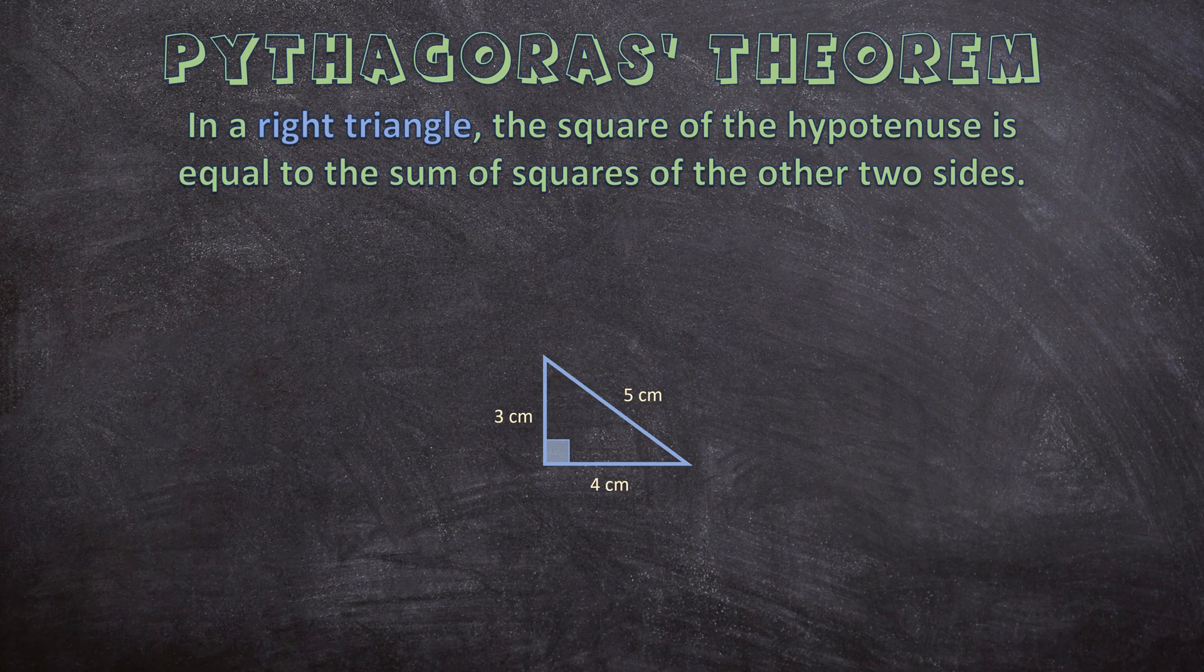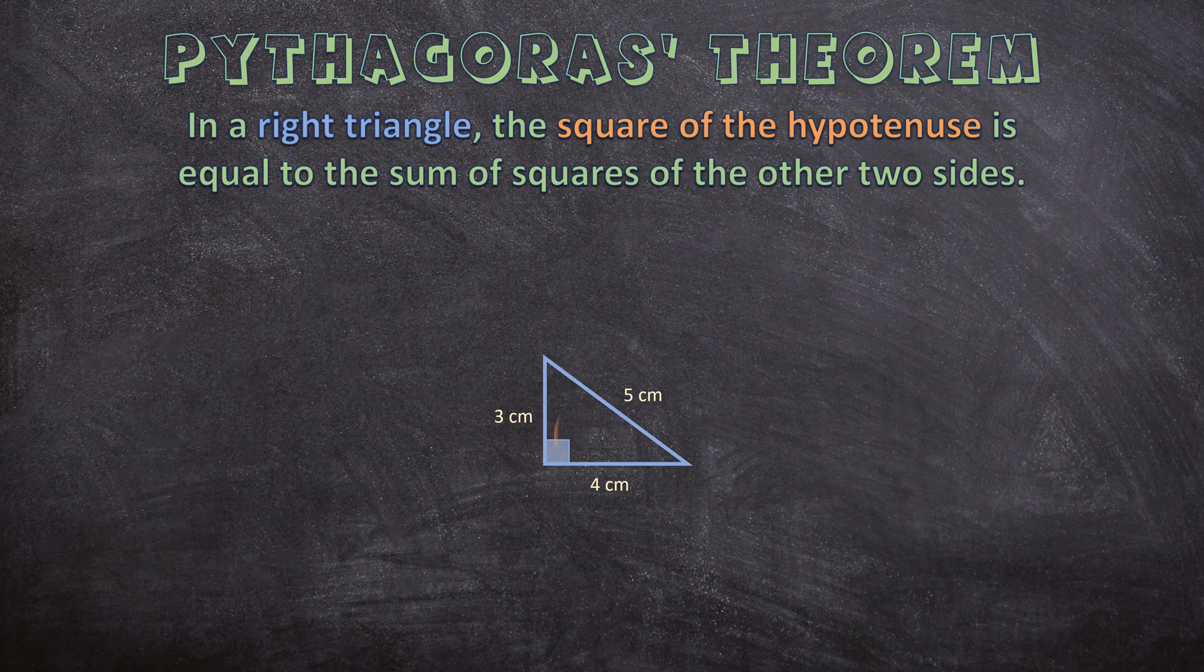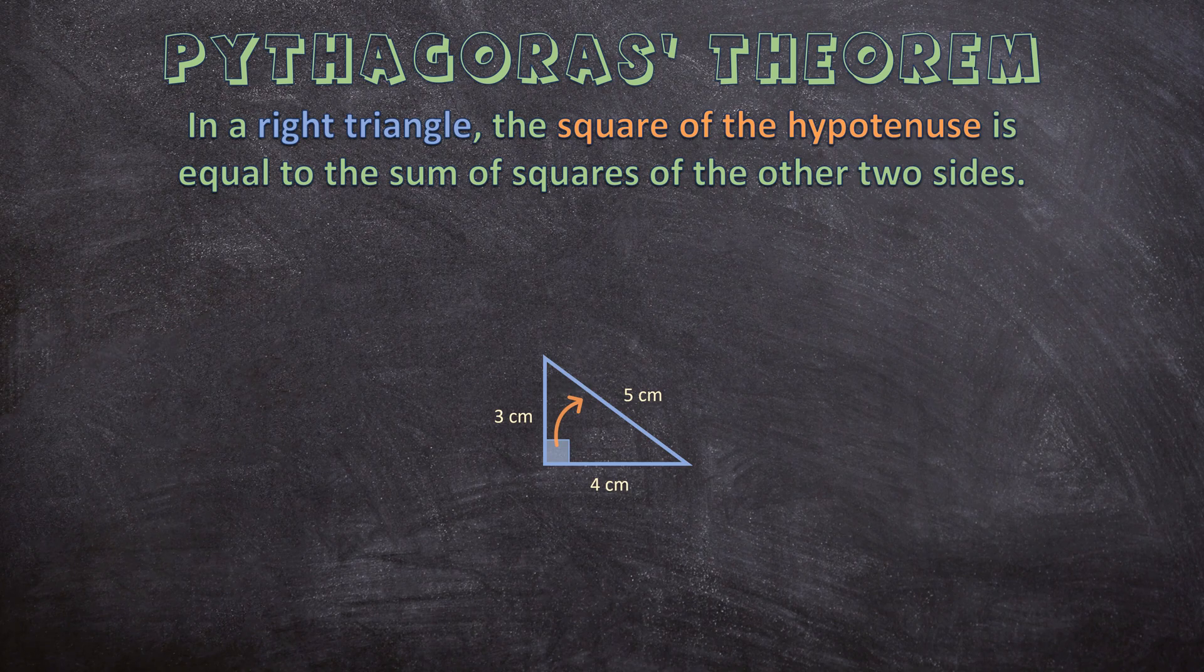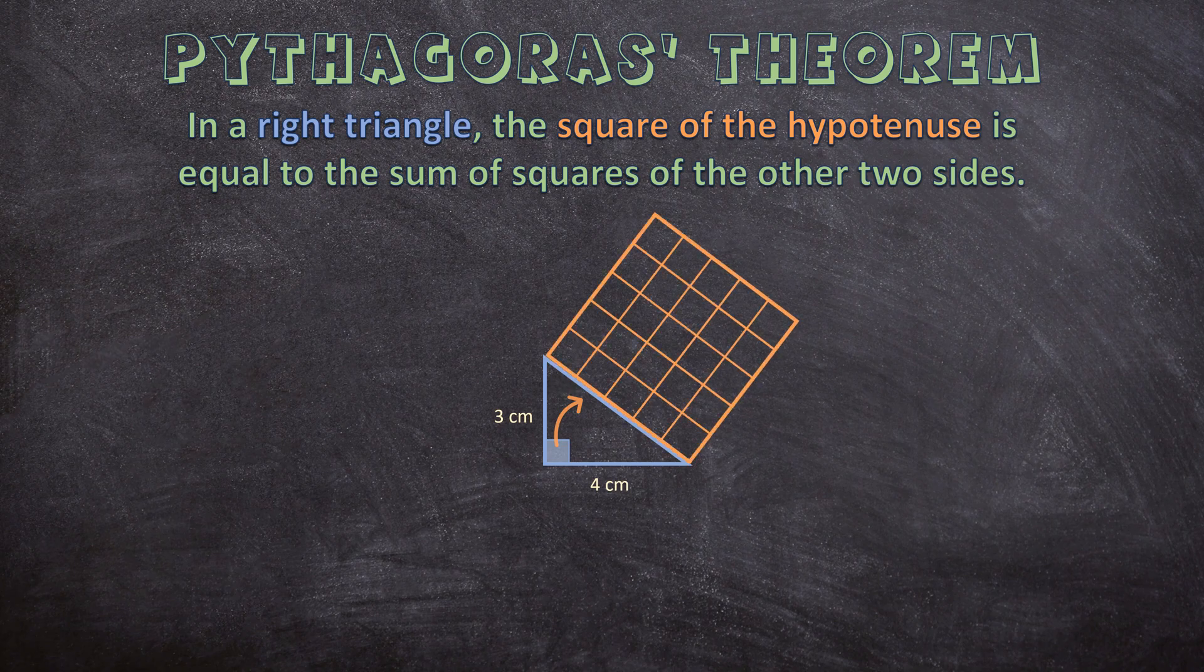And now let's continue with the theorem. So first we have a right triangle and then it says the square of the hypotenuse. The hypotenuse of a right triangle is always the side opposite the right angle. So it's the longest side of the triangle. But the theorem says the square of the hypotenuse. So we need to take that side and we make a square five centimeters by five centimeters. So there we have it.